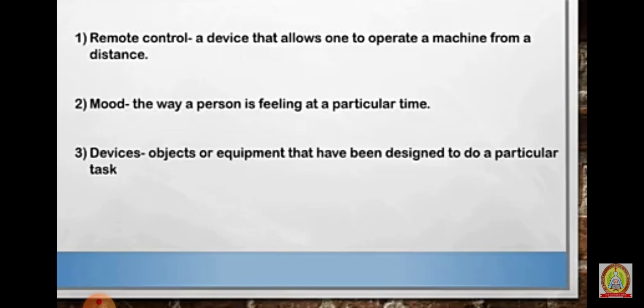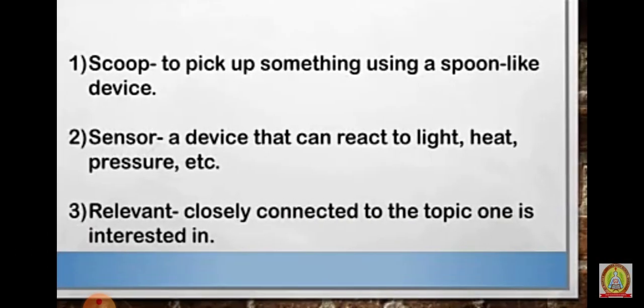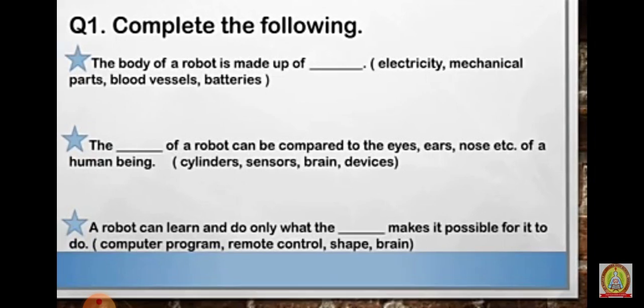Mood: the way a person is feeling at a particular time. Devices: objects or equipment that have been designed to do a particular task. Scoop: to pick up something using a spoon-like device. Sensor: a device that can react to light, heat, pressure, etc. Relevant: closely connected to the topic one is interested in.